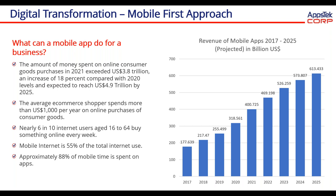The amount of money consumers are spending on goods purchases in 2021 exceeded $3.8 trillion dollars — an increase of 18% from 2020 — and it is expected to reach $4.9 trillion dollars by 2025. The average e-commerce shopper now spends more than $1,000 per year on online purchases of consumer goods. More people are making purchases via mobile devices than via desktop and laptop systems.